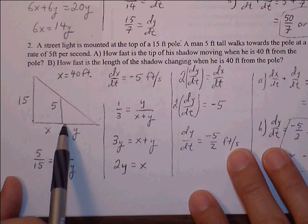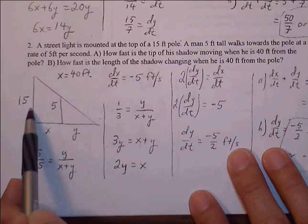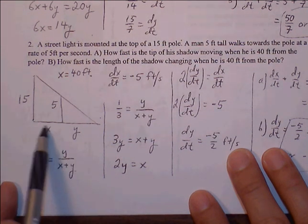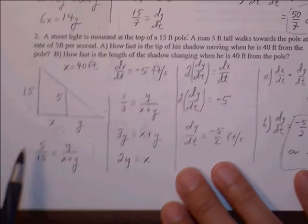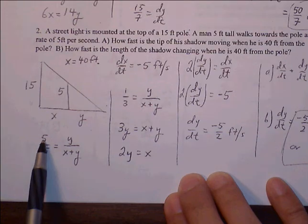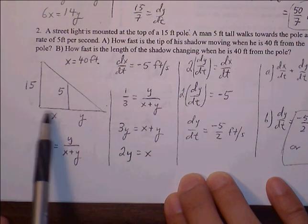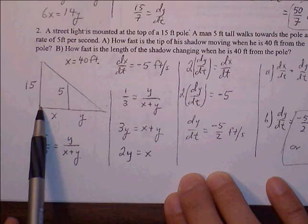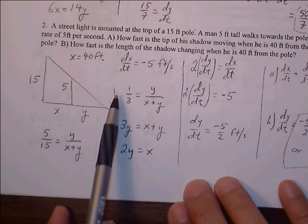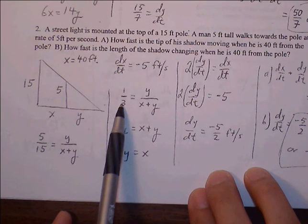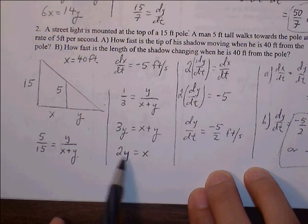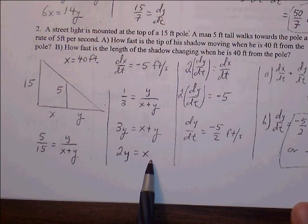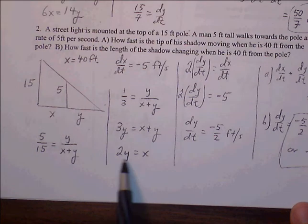Part B asks how fast the tip of the shadow is moving. The rule is we add the two rates: the rate of shadow change and the rate of the person walking. So 15/7 plus 5 gives 50/7 feet per second. Notice it doesn't matter how far the person is from the lamppost — this distance does not affect these answers. The distance of 30 feet is essentially extra information that is not needed in the problem, and you will see this a lot in homework problems.